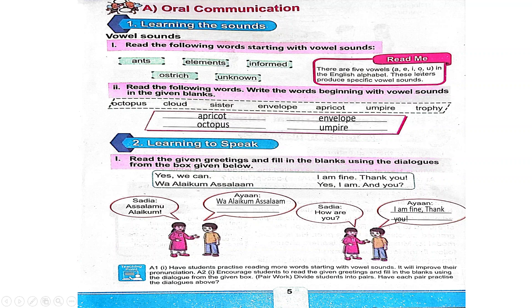The next vowel is O. Do we have a word that starts with O? Yes — is it octopus? Yes, it's octopus. So we will write octopus here.